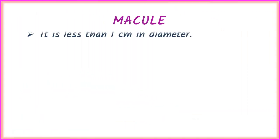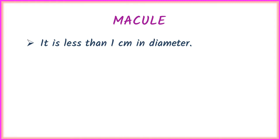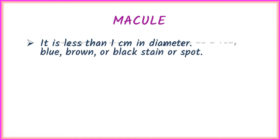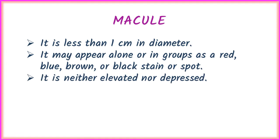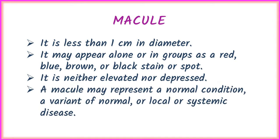The first term is macule. It is less than one centimeter in diameter and may appear alone or in a group as a red, blue, brown, or black stain or spot. It is neither elevated nor depressed. A macule may represent a normal condition, a variant of normal, or a local or systemic disease.